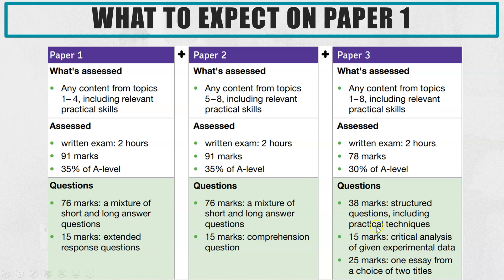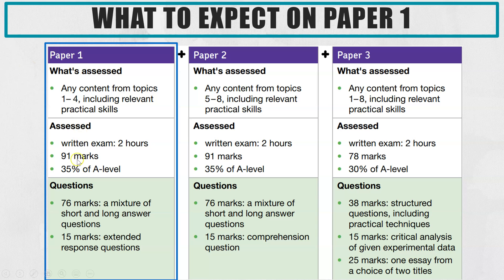So what to expect from Paper 1? This is showing you what is coming up on all three of the AQA A-Level Biology papers. Now if you don't take AQA, this bit is not relevant, however some of the top tips later on will still be relevant to you. The main thing I want to focus on is this bit at the bottom — 76 of the 91 marks are a mixture of long and short answer questions, but 15 of those marks are extended response.